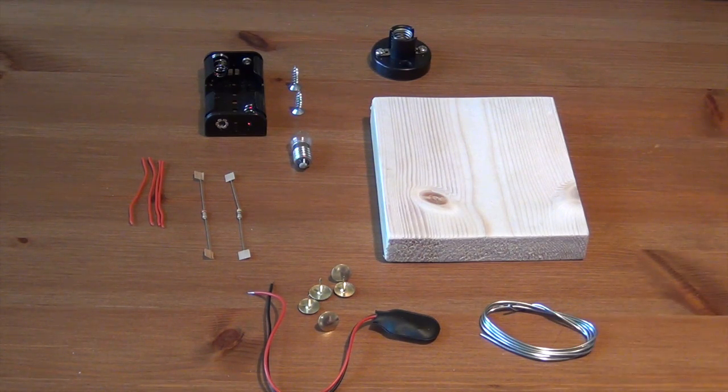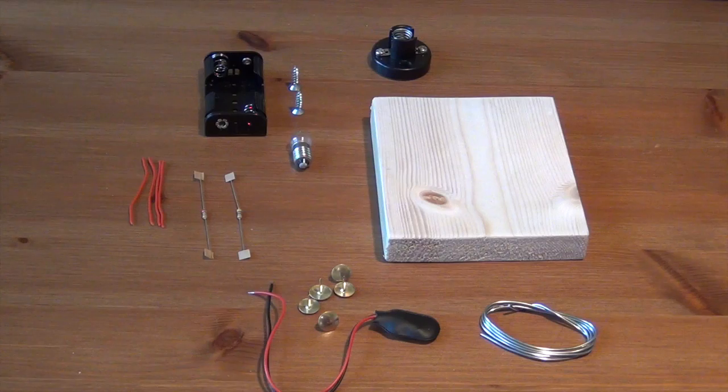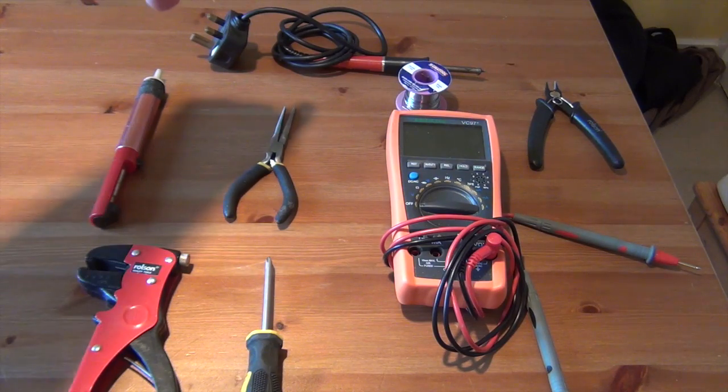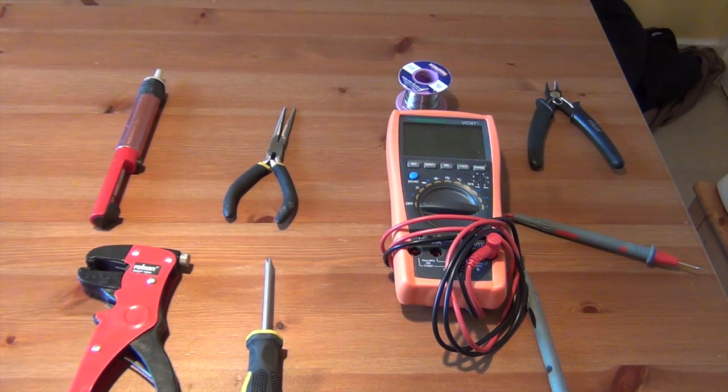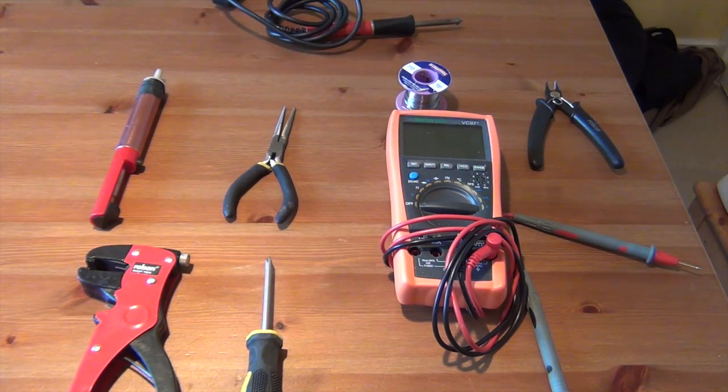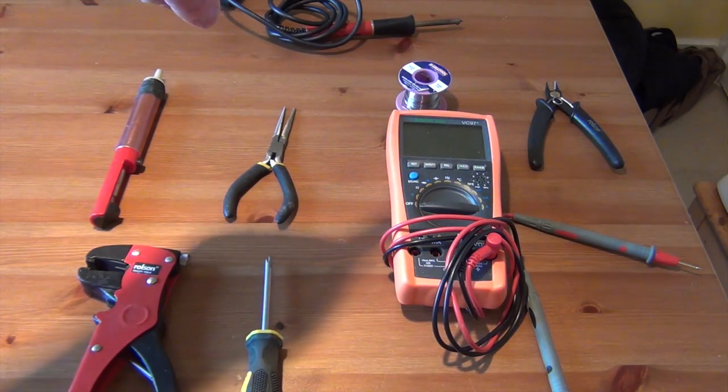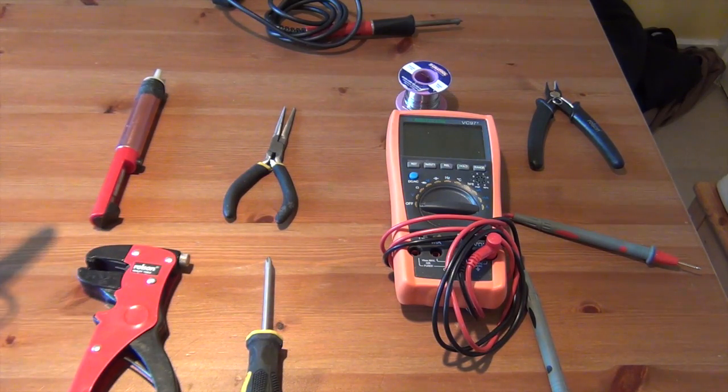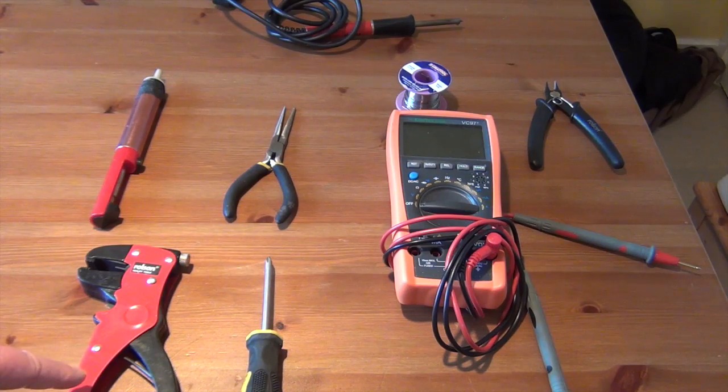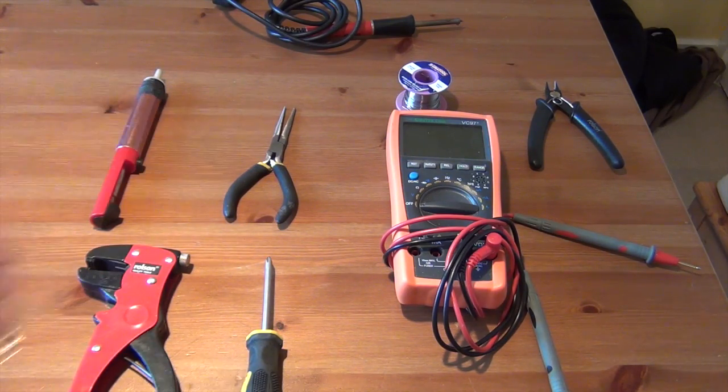We're also going to need some solder and perhaps this is a good time to show you the sort of tools that we're going to need to put this kit together with. Working top to bottom I've got a soldering iron, this one is a 12 watt soldering iron, anything about 15 or 18 watts is fine, that one's probably a little bit too small to be honest with you. We've got some cutters, some solder, needle nose pliers, a solder sucker, a pair of wire strippers, screwdriver and a multimeter.